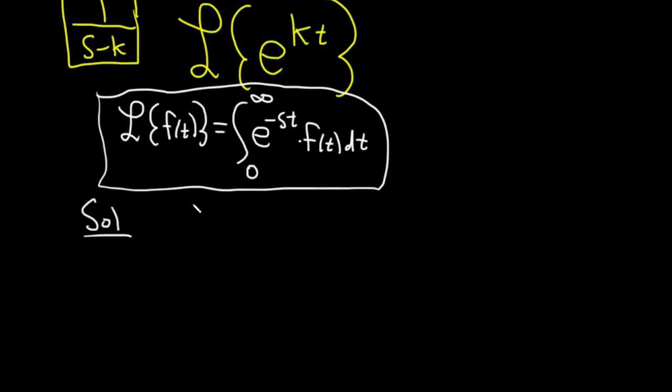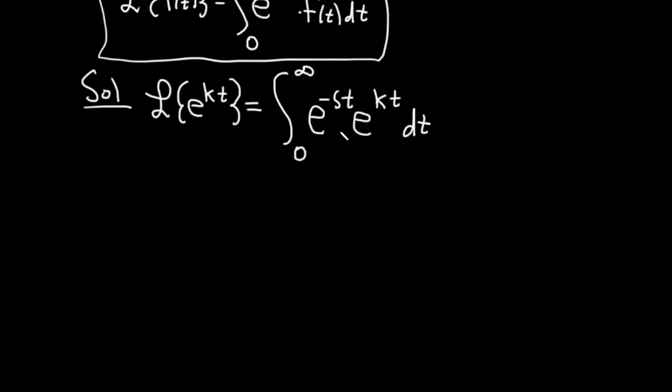So solution. We'll start by simply just applying the formula. So this is the Laplace of e to the kt. This is equal to, and so now what we'll do is we will replace f of t with e to the kt. So this is the improper integral from 0 to infinity of e to the negative st, and then e to the kt, and then we have our dt. The next step is to realize that we have the same bases here. Whenever you have the same base, you can add the exponents when you're multiplying. So this is equal to the improper integral from 0 to infinity of e to the negative st plus kt, and then we have our dt right here.